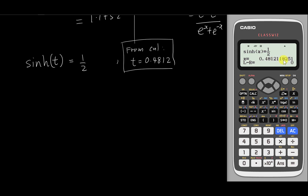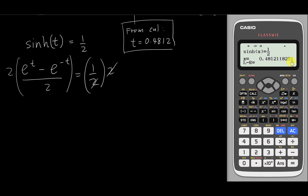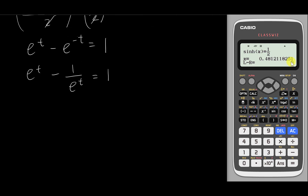The calculator solves it in a few seconds. But what if we do it manually? We already know the formula for hyperbolic sine, so since the angle is t: (e^t minus e^(−t)) / 2 = 1/2. Multiply both sides by 2 to get: e^t minus e^(−t) = 1. We know e^(−t) is 1 over e^t. Then multiply every term by e^t. The first term gives (e^t)^2, and the second gives minus 1, equal to e^t.